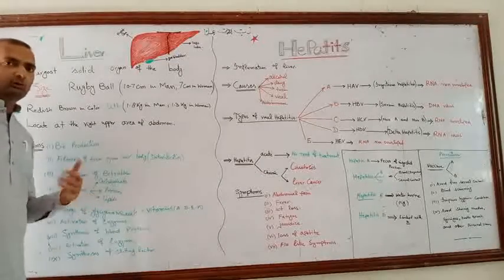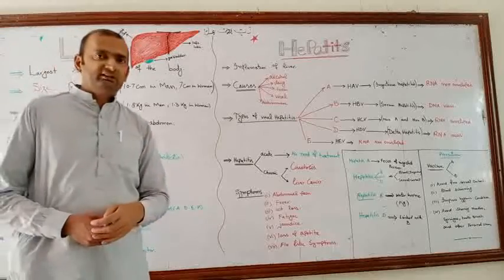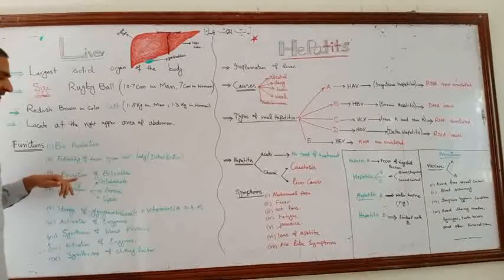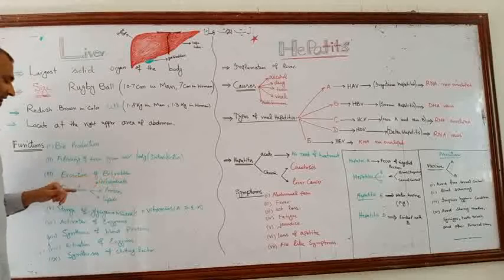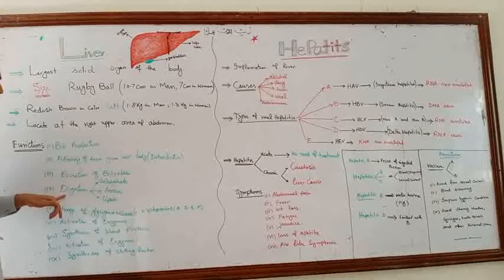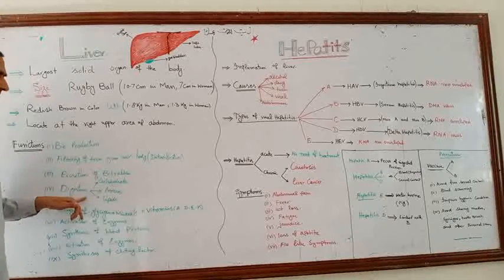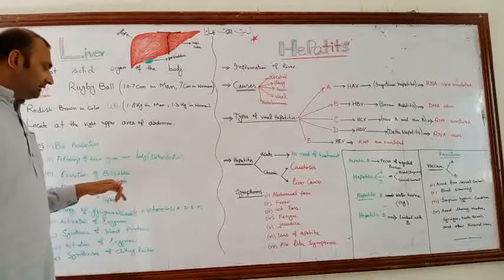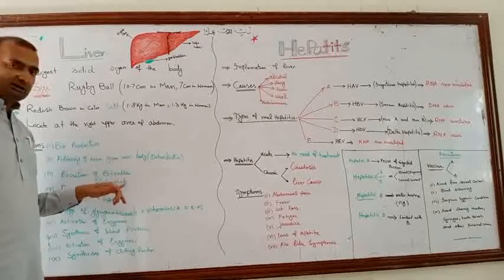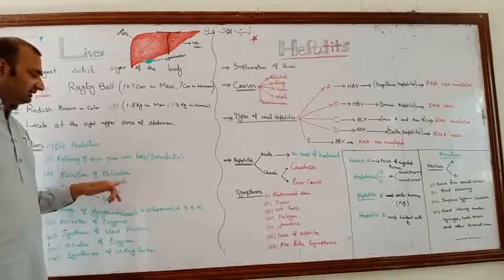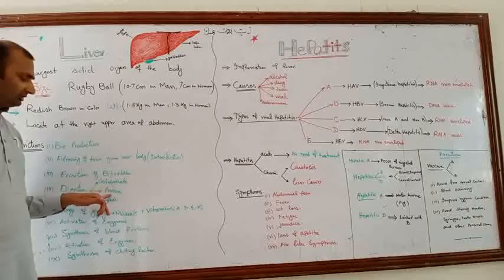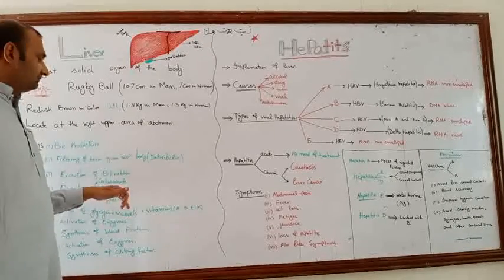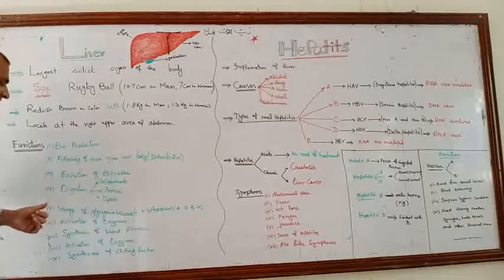Number three is the excretion of bilirubin. Bilirubin is produced from the breakdown of old red blood cells, and the liver is involved in the excretion of bilirubin. Number four, the liver is involved in the digestion of all kinds of food nutrients — carbohydrates, proteins, and lipids.